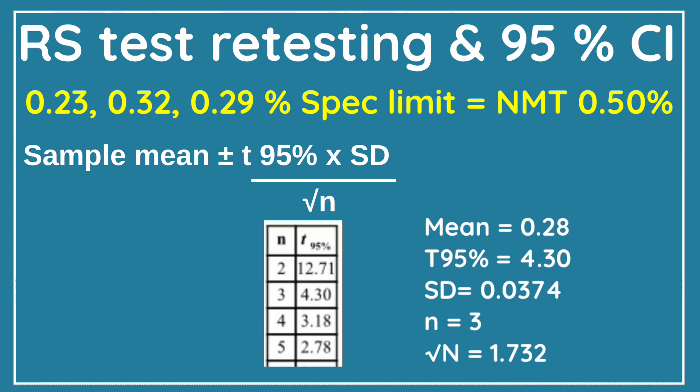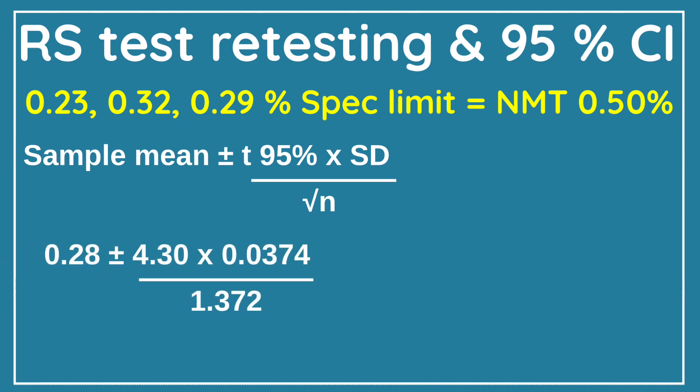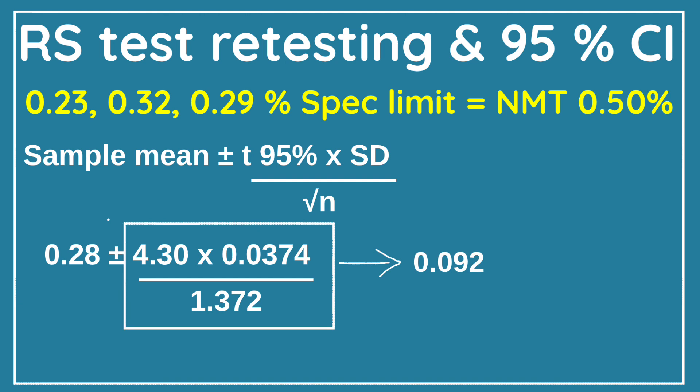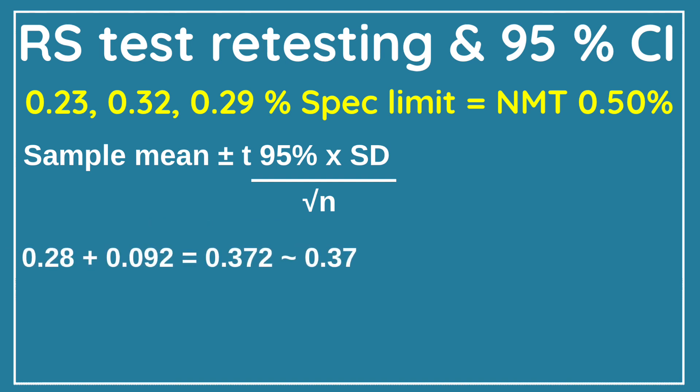Let us calculate the 95% confidence interval limit using this formula. Mean = 0.28, and T95% for three preparations = 4.30. Standard deviation = 0.0374, and n = 3, so √3 = 1.732. After calculating this part of the calculation, you will get the value 0.092.